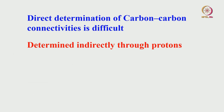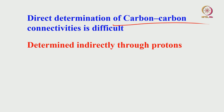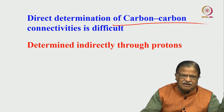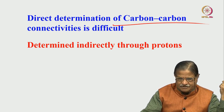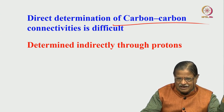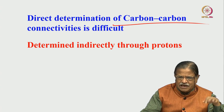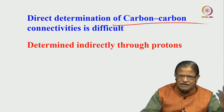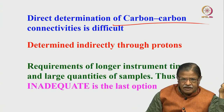Why can we not do direct determination of carbon-carbon connectivity? Carbon-13 is already only 1% abundant; simultaneously seeing two carbons as carbon-13 is very difficult. To establish the correlation between two carbons in a two-dimensional experiment is a very challenging task. As a consequence, it is usually determined indirectly through protons — like HSQC, transfer the magnetization to proton and to carbon and back, like that.